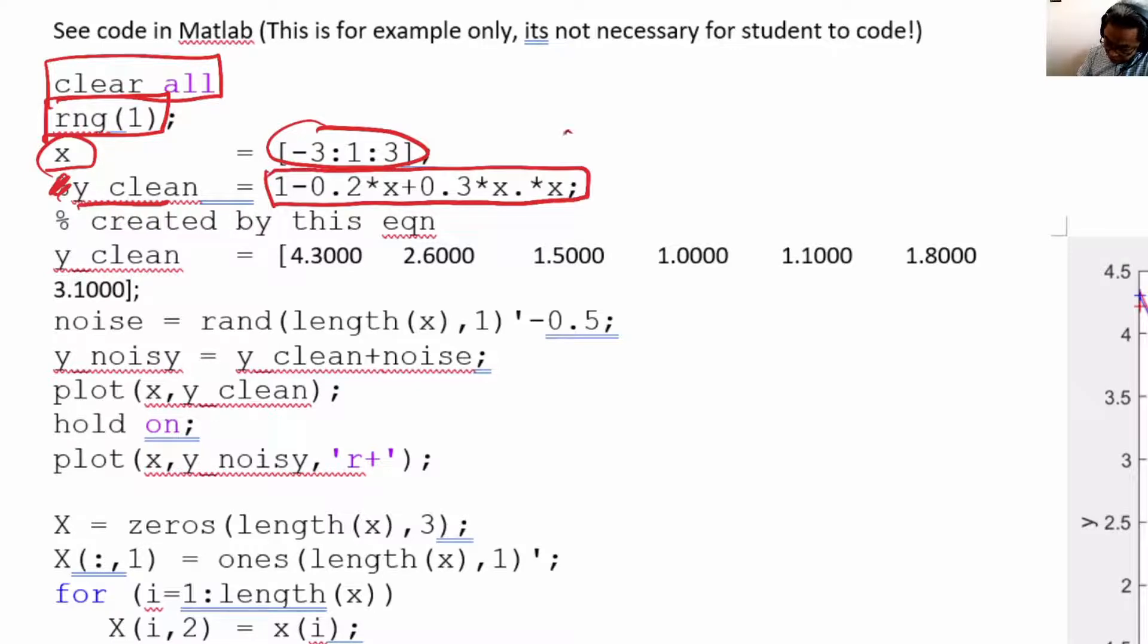Minus 0.2 is the parameter for x, and one is the parameter for β₀. From here we know β₀ is 1, β₁ is minus 0.2, and β₂ is plus 0.3. We have created y_clean using this equation.